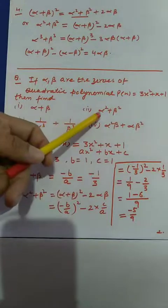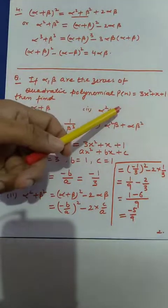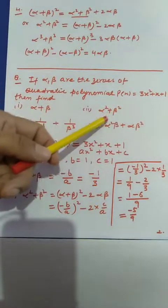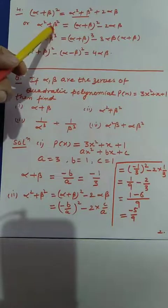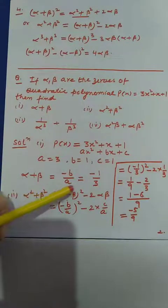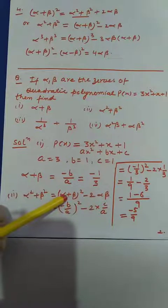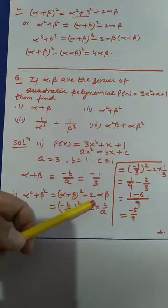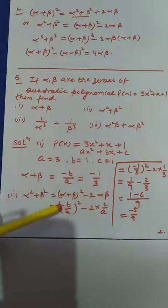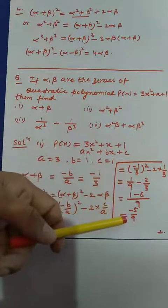Next, to find alpha² plus beta², I use the result: alpha² plus beta² equals (alpha plus beta)² minus 2·alpha·beta. This converts the expression into the form of alpha plus beta and alpha·beta. Replacing alpha plus beta with minus b divided by a, and alpha·beta with c divided by a, then substituting the values of a, b, and c, the final result comes out to be minus 5 divided by 9.